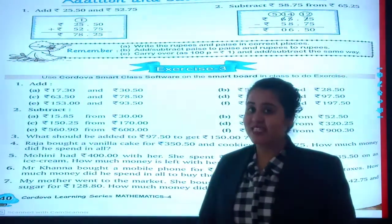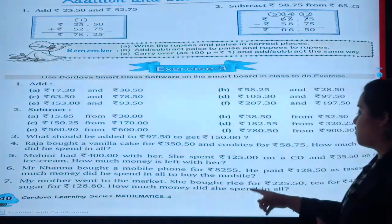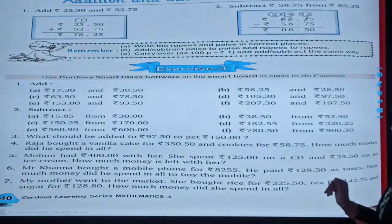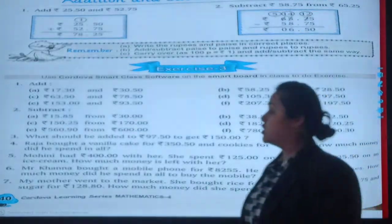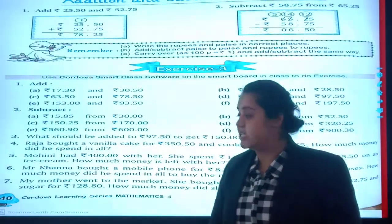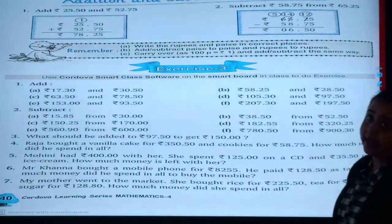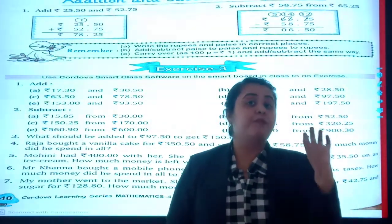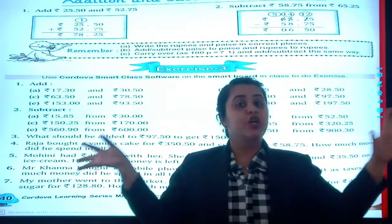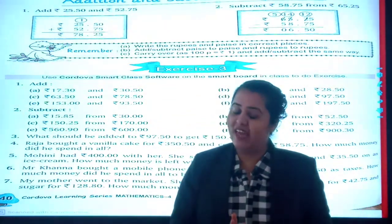Last question for this exercise. Mangu went to the market. She bought rice for 225 rupees, dal for 42.75 rupees, and sugar for 128.80 rupees. How much money did she spend in all? In question, it is said spend in all. You will add up all the things. But remember, decimal below decimal area.